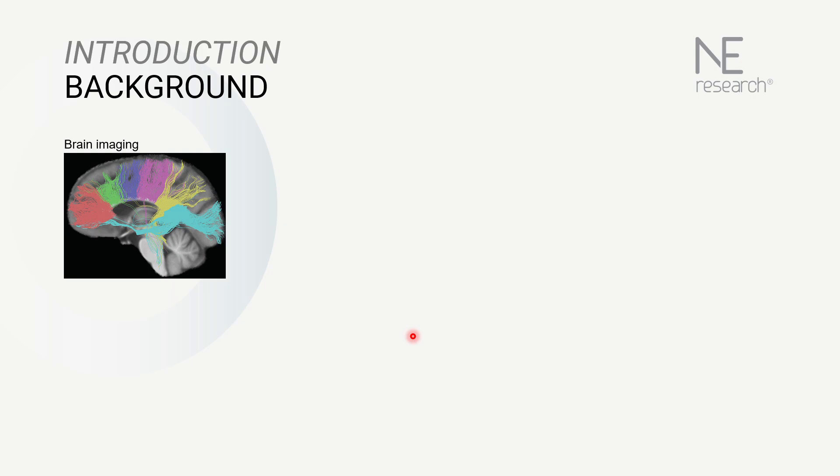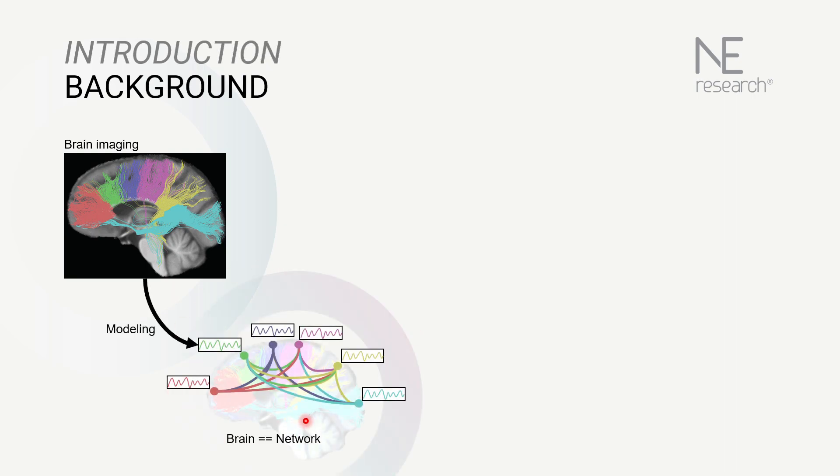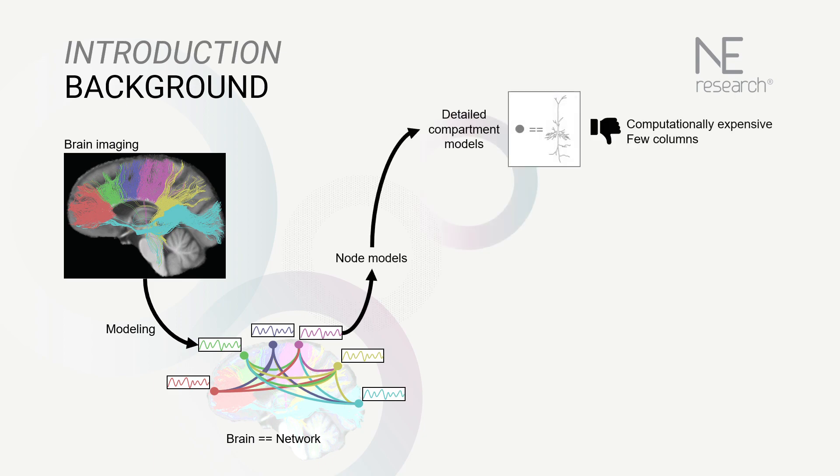To address these challenges, we model the brain as a network where each node represents a brain area. To describe the cortical laminar electrophysiology of each node, detailed compartment models are typically used, but they are computationally expensive and limited to representing just a few cortical columns.